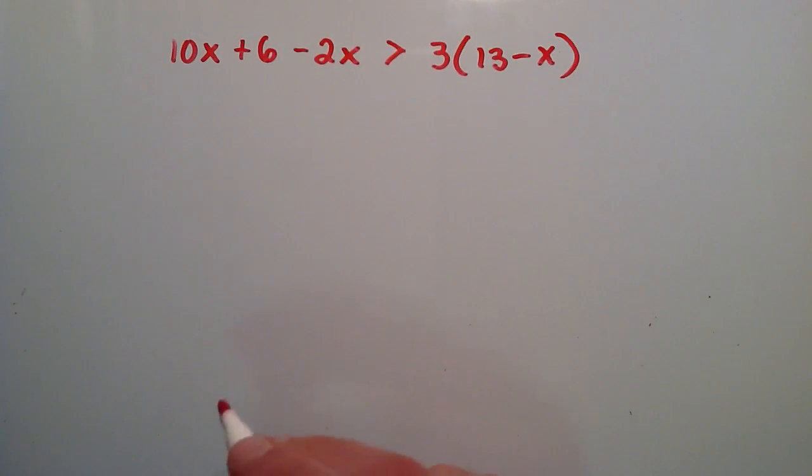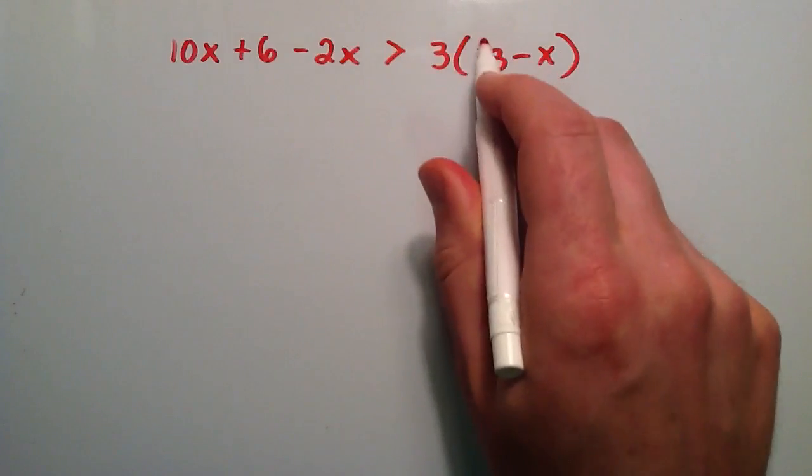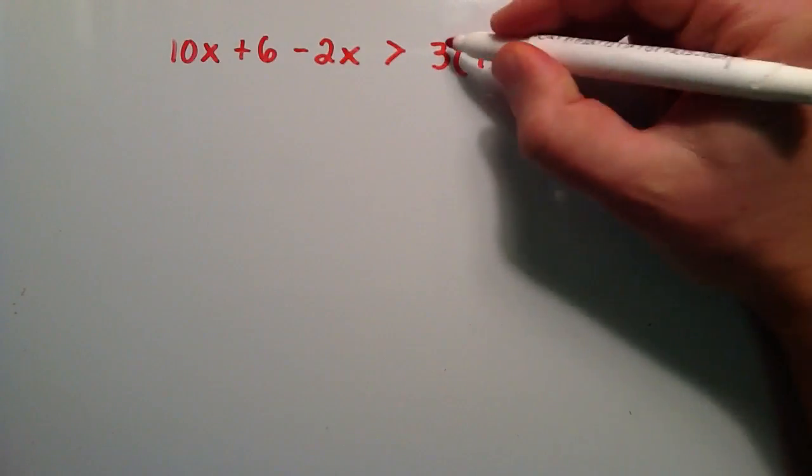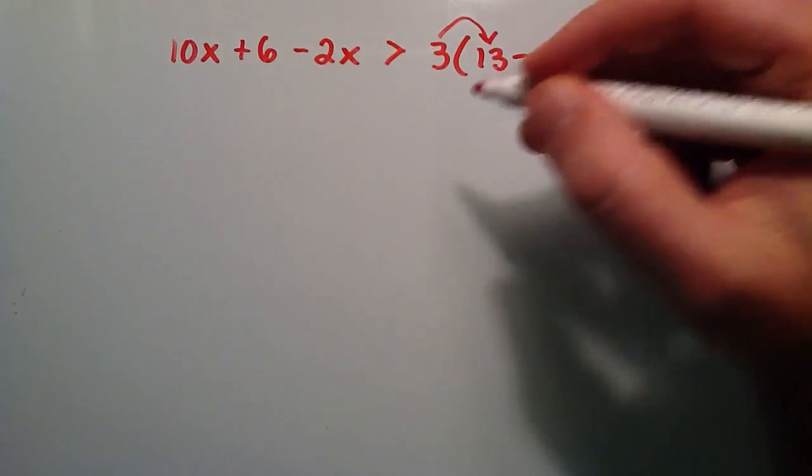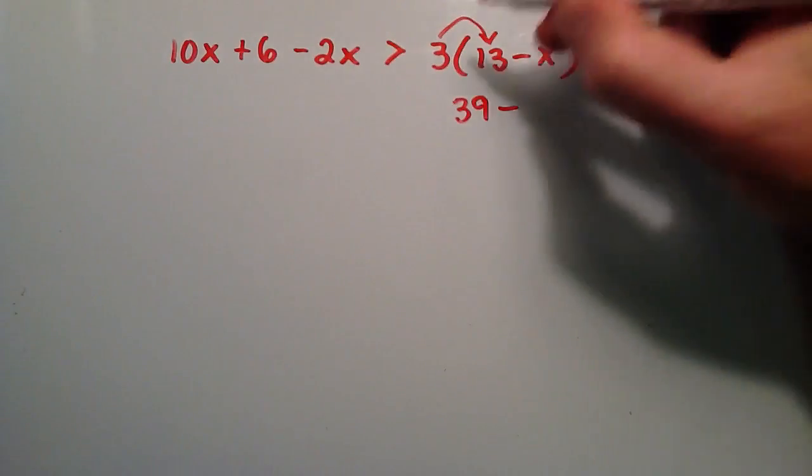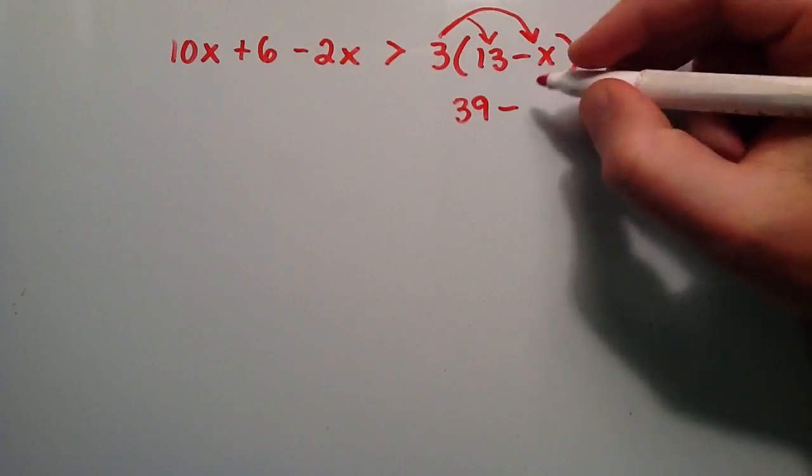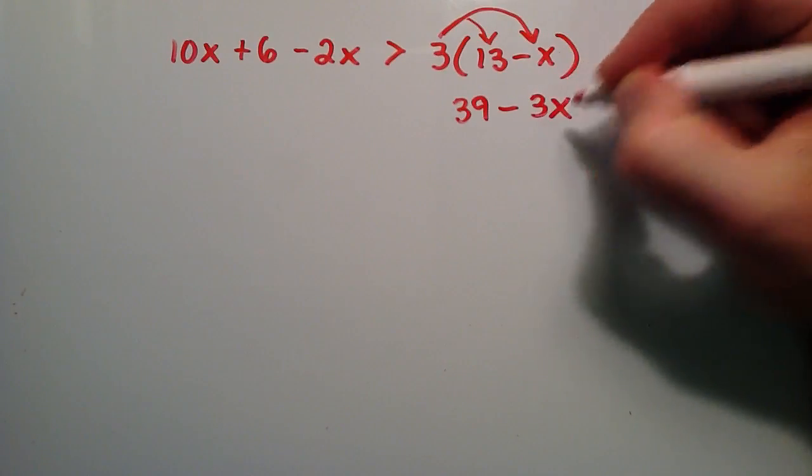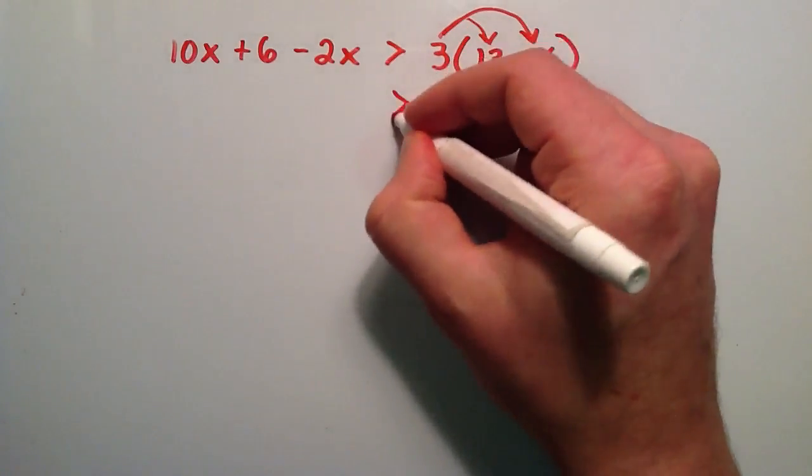So the first thing we want to do now is go ahead and distribute the 3 into the parenthesis here. So 3 times a 13 is going to give us a 39. And then we'll just move the subtraction sign down here. 3 times an x is going to be 3x. And then we have our greater than sign here.